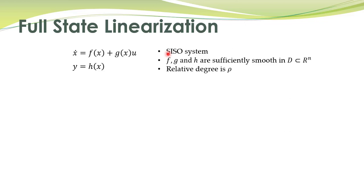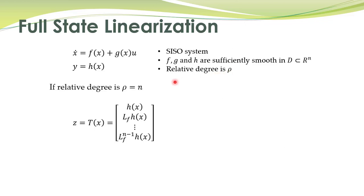For multi-input multi-output systems, you can refer to the book by Isidori. We are already familiar with the concept of relative degree, which is denoted by rho. If the relative degree of a system comes out to be equal to n, that is the dimension of the state vector, then we can utilize this state transformation.